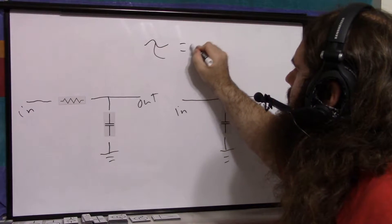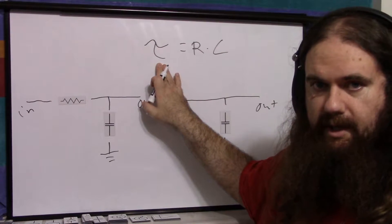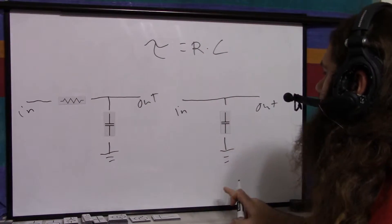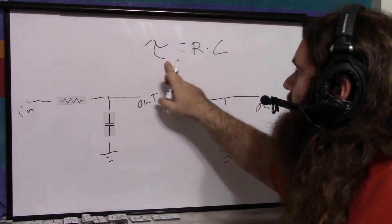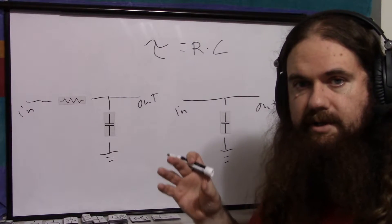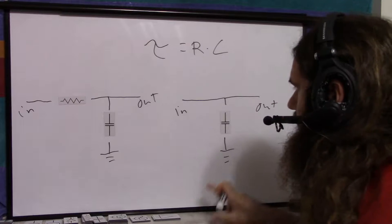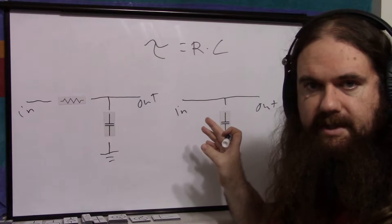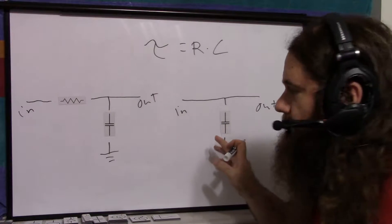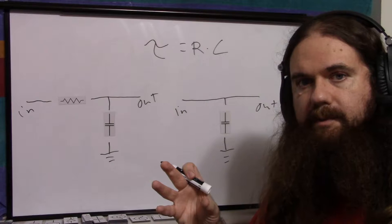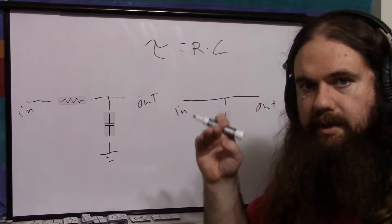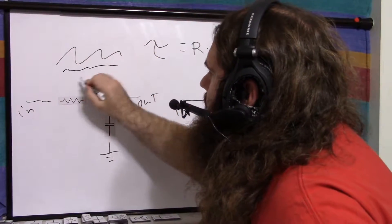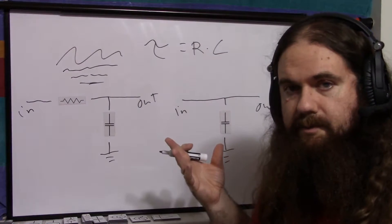If you recall, tau equals R times C — the charge and discharge time — and 5 tau equals 5 times R times C for a full charge and discharge cycle. If R is very close to zero, then tau is very close to zero, and charging and discharging happens extremely quickly. This is how the decoupling capacitor works: it handles noise on the VCC pin by supplying power when it dips and absorbing extra when it rises, smoothing it out. The faster the RC time constant, the more filtering and smoothing you get.